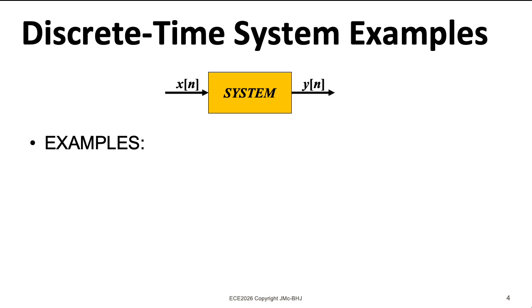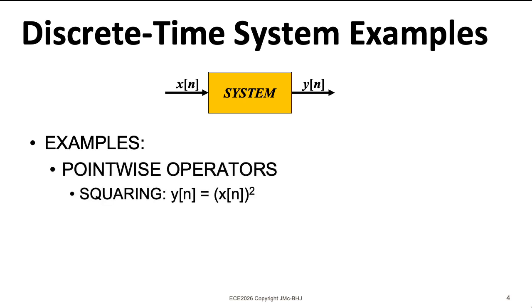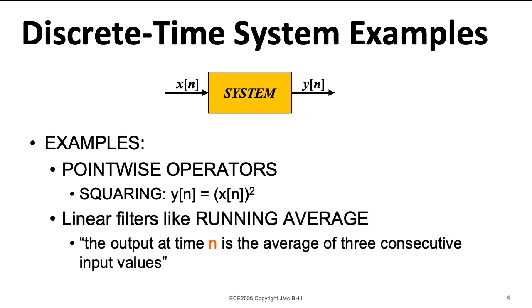As an example of a simple system, you might just take all the inputs and square them. Now, this is a nonlinear system, so most of the techniques we talk about in this course don't apply to this system. I'll define what it means for a system to be linear a couple of lectures from now. Another example of a system might be something where you take the average of a certain number of consecutive values.